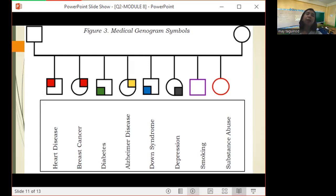Next is for breast cancer. We have a circle inside, then a square at the upper right corner of the circle, then a red color again. Then for diabetes, a square, then another square at the left lower corner and it is colored green.